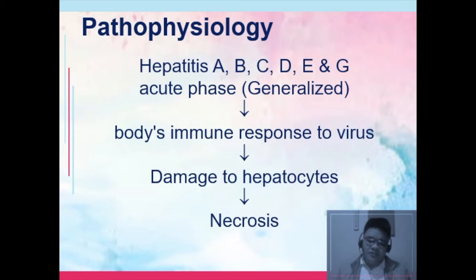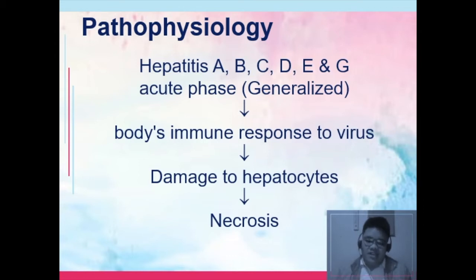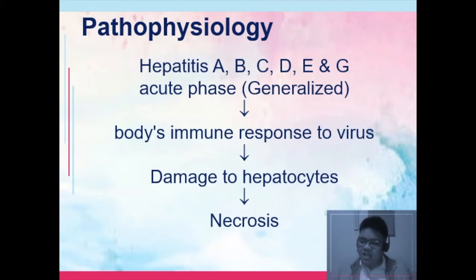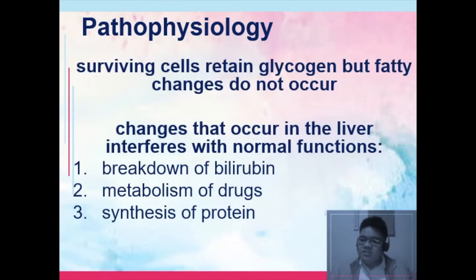The pathophysiology of hepatitis is common among all types — A, B, C, D, E, and G. It starts with an acute phase wherein the patient will feel generalized vague symptoms, sometimes just weakness. Then your body will have an immune response to the virus, which is populating your liver, damaging the hepatocytes — the basic cells of our liver. With this damage to the hepatocytes, the liver will not be able to function properly in terms of metabolism, excretion of waste products, or even the production of clotting factors. Later on, this leads to necrosis. The surviving cells will retain glycogen, but fatty changes do not occur.